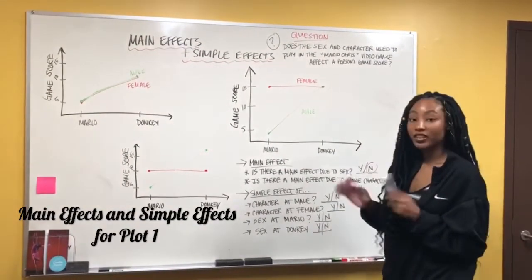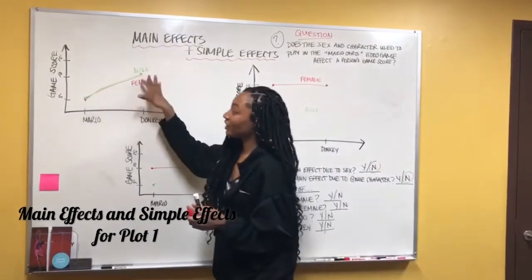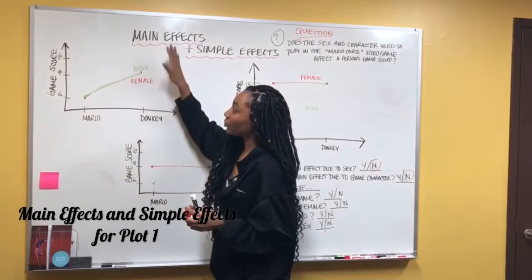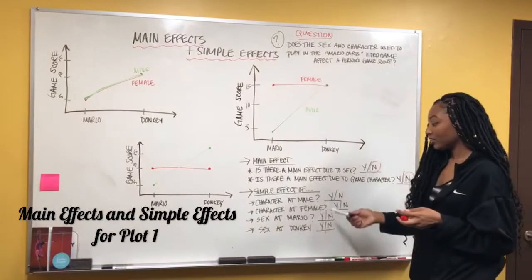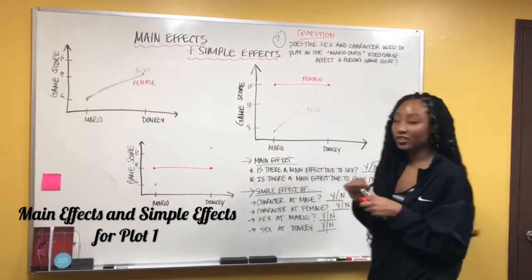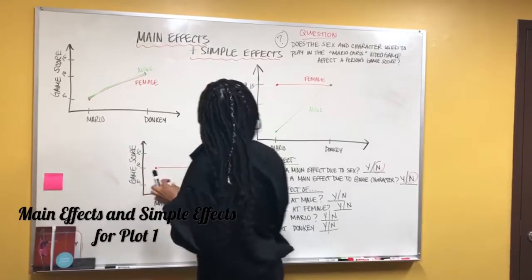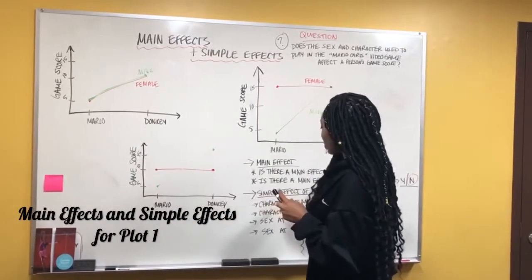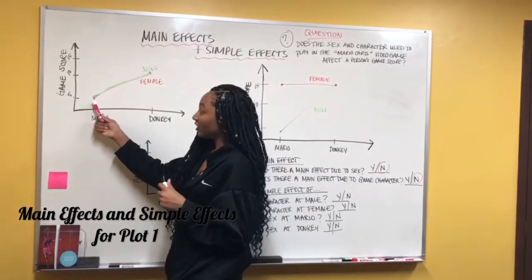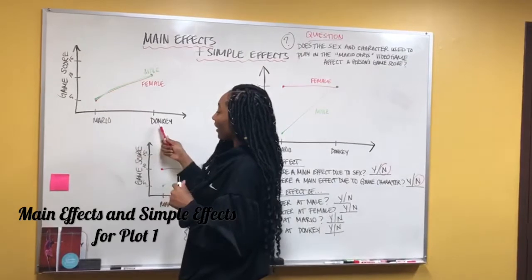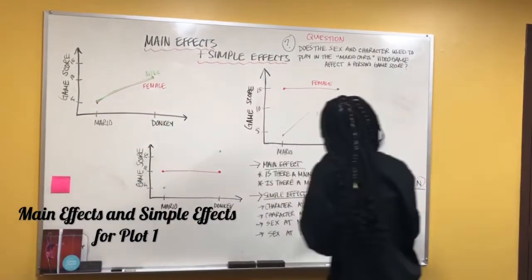Now we'll go on to simple effects. With simple effects, you're supposed to look at just one of the groups at a time. We're only going to look at the males first. Is there a simple effect of character at male? Just looking at the males, there actually is a simple effect of character at male because when the males start at Mario they score a 5, but when they play using Donkey they score a 15. So there is an effect — we'll put yes.